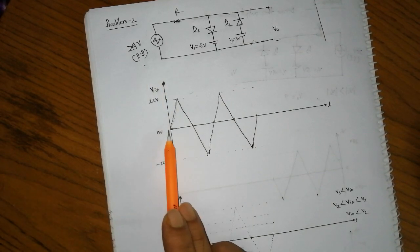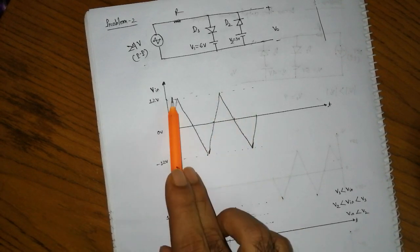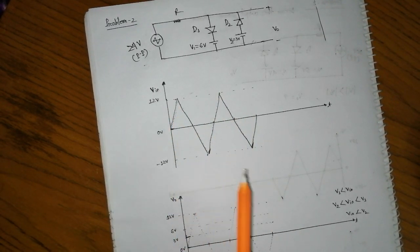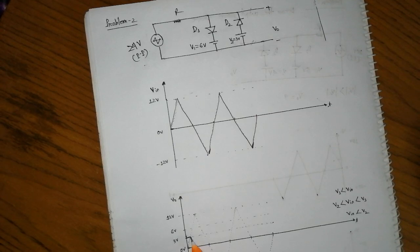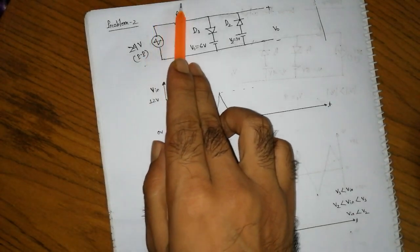That is the input signal. We already have the input signal, so we can say that the input is 0 to 3. This is why the input is 0 to 3.